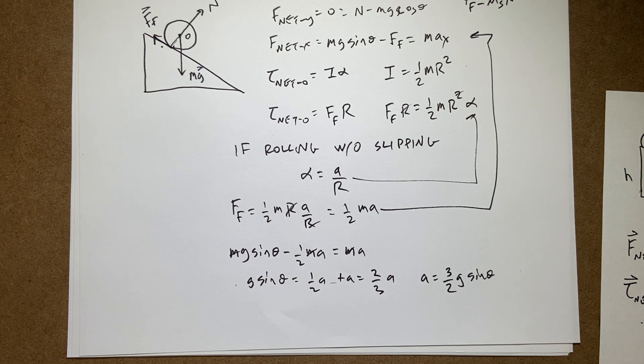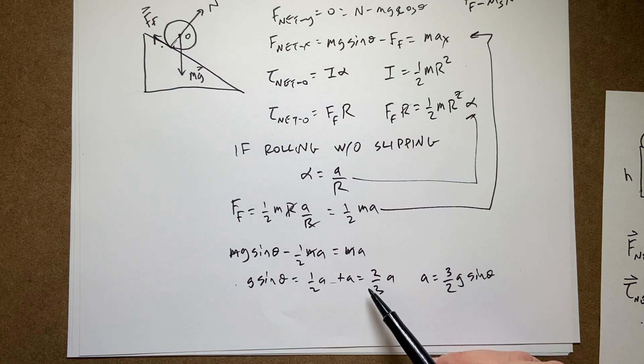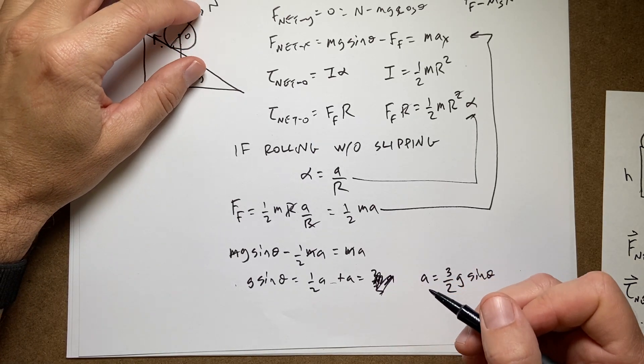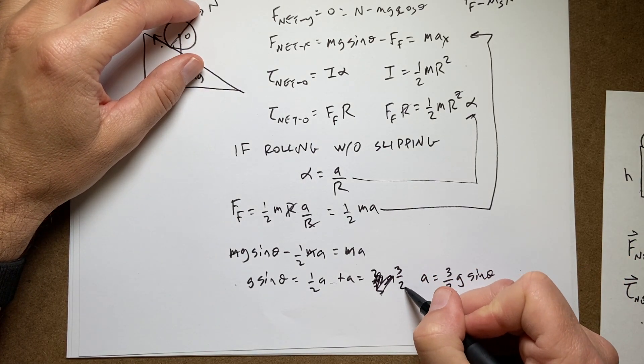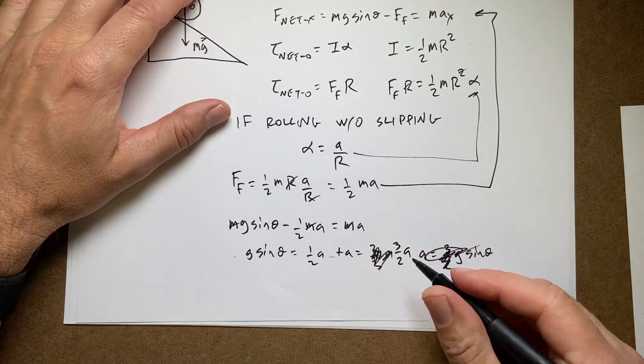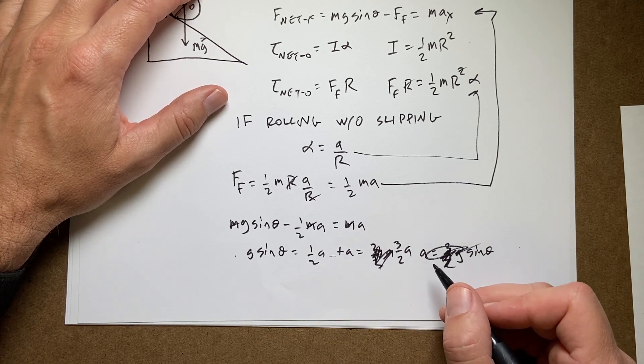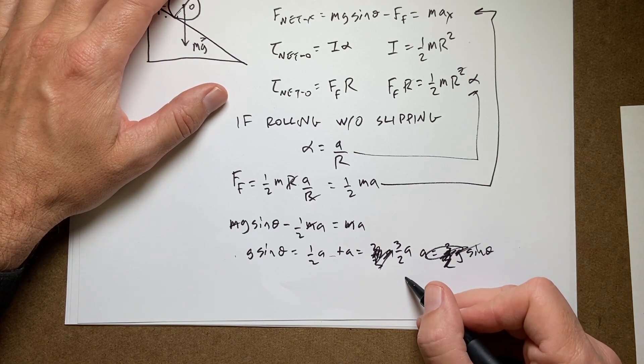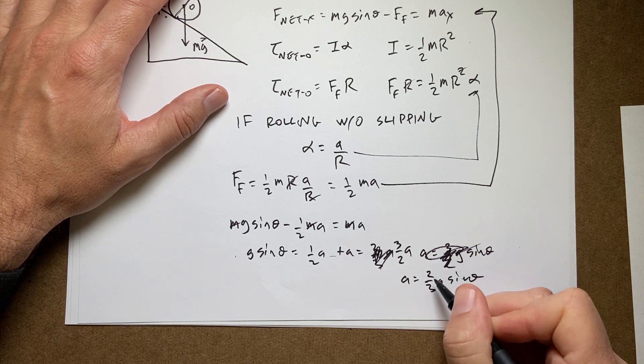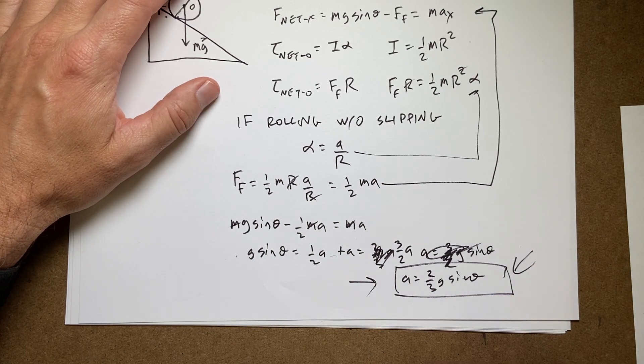I got two thirds. One half. Oh, see? Three halves. If you add one half plus one, you get three halves, not two thirds. That was my fault. So I get A equals two thirds G sine theta, which is the same as before. Yay.